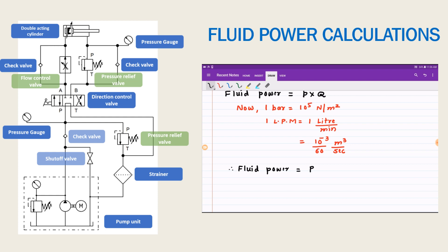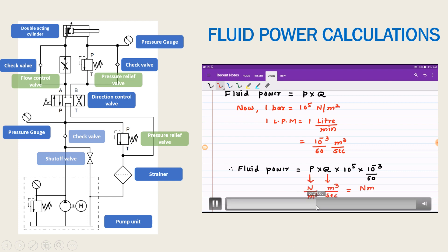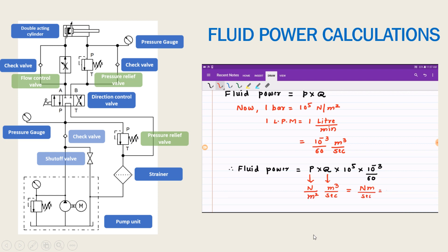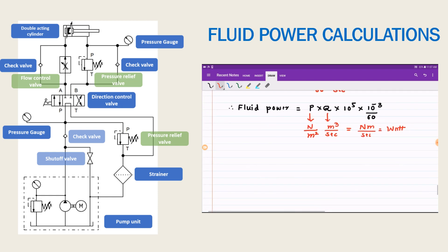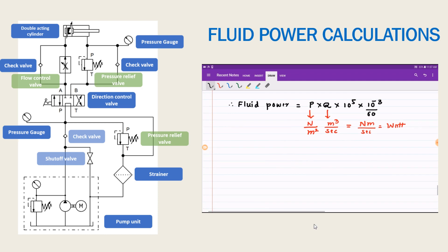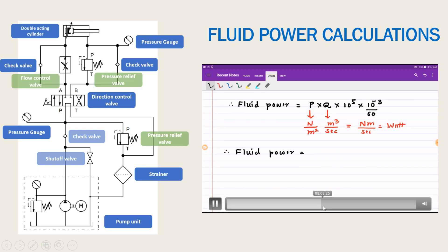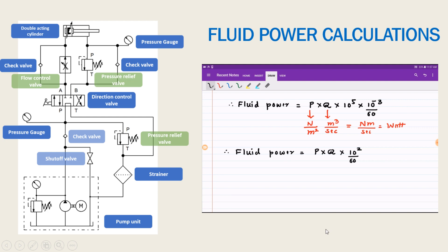Substituting p into q: one bar is 10 to the power 5 Newton per meter square, and one liter per minute is 10 to the power minus 3 divided by 60 meter cube per second. Pressure is in Newton per meter square and q is in meter cube per second, so the product is Newton meter per second, that is watt. Then 10 to the power 5 into 10 to the power minus 3 gives 10 to the power 2, divided by 60.